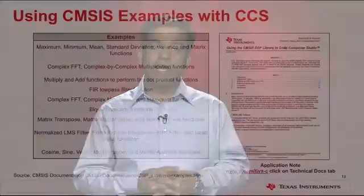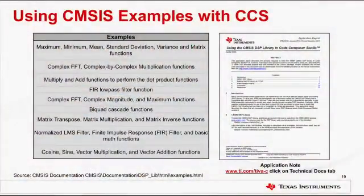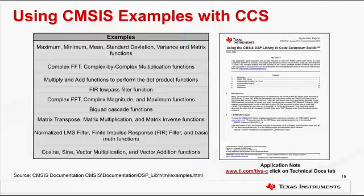These examples can be built using TI's Code Composer Studio, which can be downloaded from ti.com/ccs. To use the CMSIS DSP library and examples with Code Composer Studio, you will need to first build the library on CCS. There is an application note that describes the process required to build the DSP library in Code Composer Studio version 5, and how to build, run, and verify the ARM DSP example projects included in the CMSIS package. This application note and several others are available at ti.com/tiva-c under the technical docs tab.